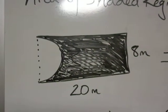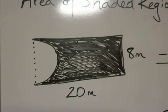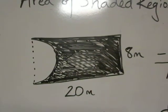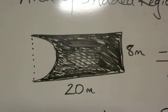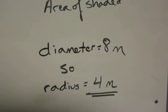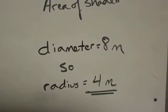When I look at this picture I need to think about what information I'm given. The eight meters that appears on the right side of the picture also correlates to the left side of the picture. That means that my diameter of my circle is eight meters, so my radius is four meters.